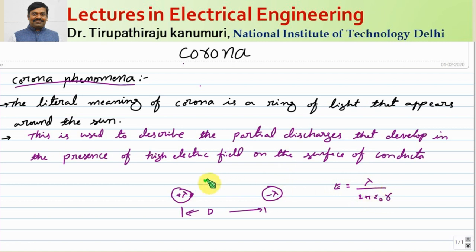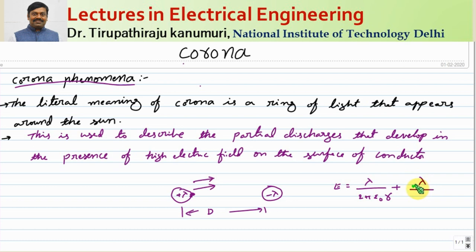This is the electric field due to the first conductor. Because of the second conductor, the electric field intensity is in the same direction. So the total electric field intensity on the surface of any conductor is due to the first plus the second — since minus times minus is plus, this becomes lambda divided by 2 pi epsilon-naught times (d minus r). This is the total electric field stress on the surface of the conductor.